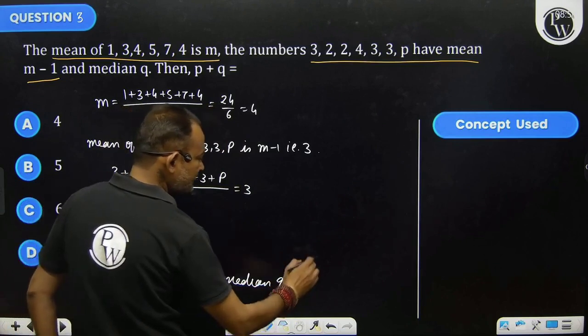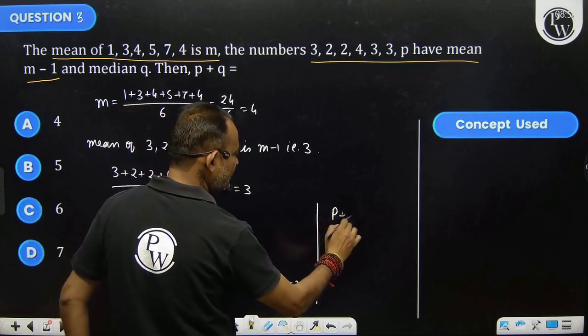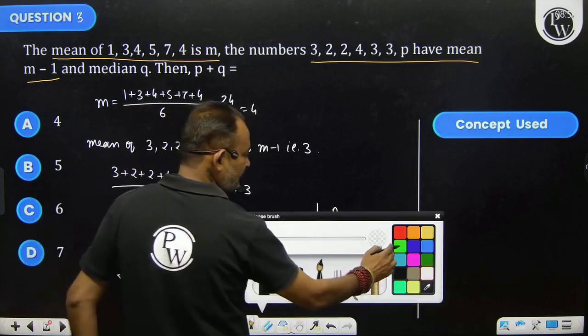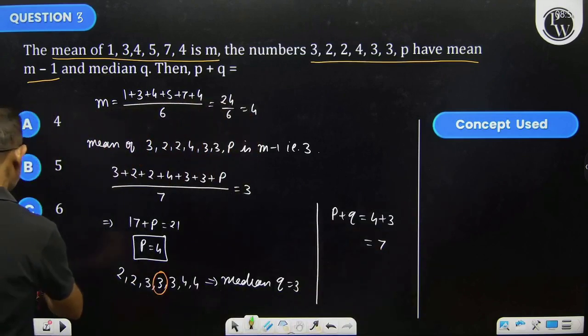That means the given p plus q equals 4 plus 3, equals 7. Then option D is correct.